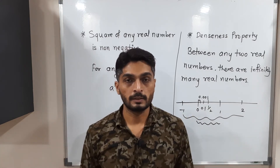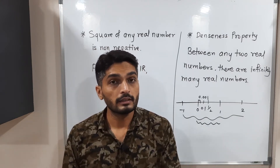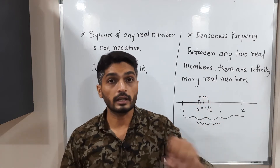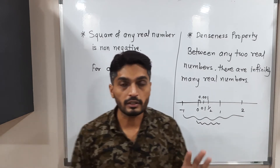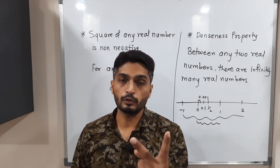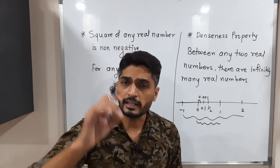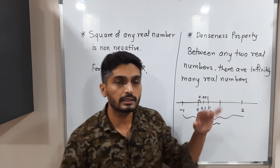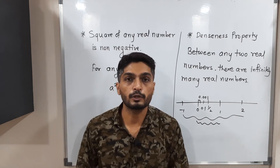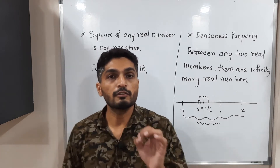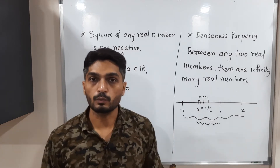These infinite numbers between any two reals include both rationals and irrationals. We can also say: between any two rationals you can find at least one irrational, and between any two irrationals you can find at least one rational. The denseness property states there are infinitely many real numbers between any two real numbers.